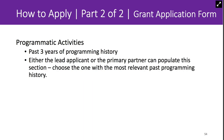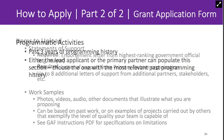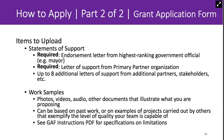We will ask you about your three past years of relevant programming history. Either the lead applicant or the primary partner can populate this section—the partner with the most relevant past programming history should be the one to fill it out. Finally, under items to upload, you'll upload statements of support. This includes the two required letters: the letter of support from the highest-ranking government official of the partnering local government entity, as well as a letter of support from the primary partner. In addition, you're encouraged to share letters of support from other stakeholders in your community engaged in this effort, and you can upload a total of 10 statements of support.